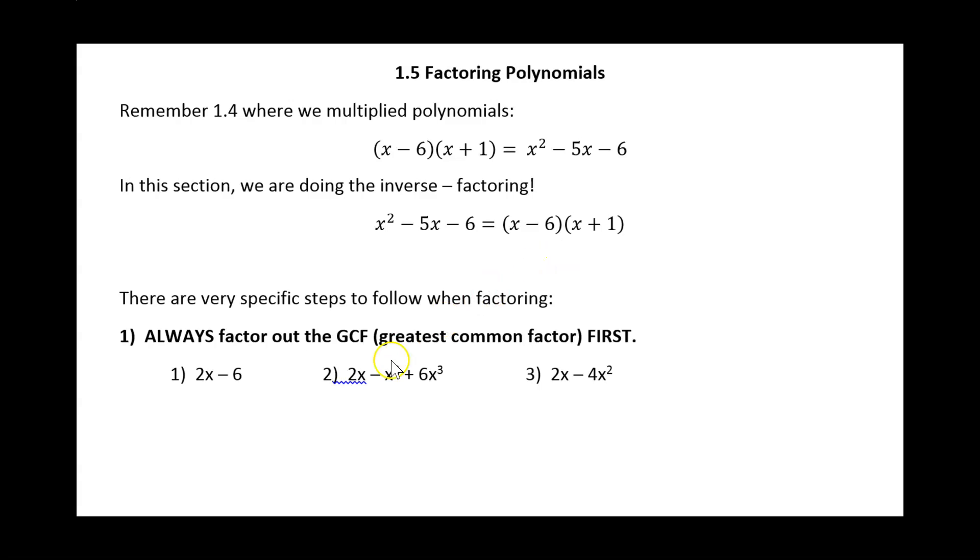Now anytime you're factoring, the very first thing that you want to do is take out your greatest common factor, the largest thing that each of your terms has in common. So for this first one, our two terms are 2x and 6. The largest thing they have in common is a 2, so I'm going to factor out that 2, and what I would be left with is x minus 3.